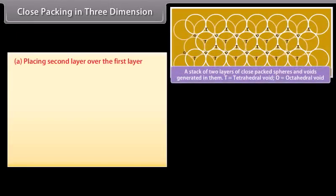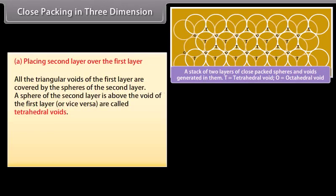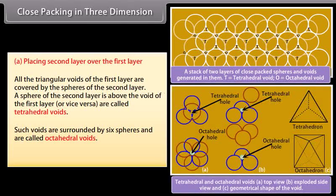Three-dimensional close packing from two-dimensional hexagonal close-packed layers can be generated by placing layers one over the other. When placing the second layer over the first layer, all the triangular voids of the first layer are covered by spheres of the second layer. A sphere of the second layer above a void of the first layer creates tetrahedral voids, while voids surrounded by six spheres are called octahedral voids.